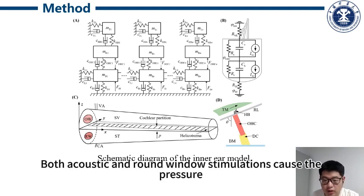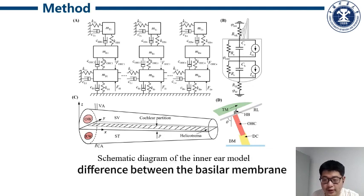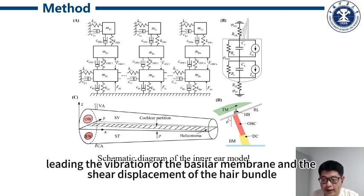Both acoustic and round window stimulation cause the pressure difference across the basilar membrane, leading to the vibration of the basilar membrane and the shear displacement of the hair bundle.